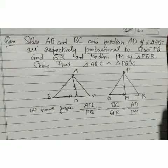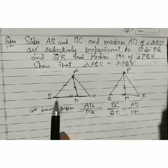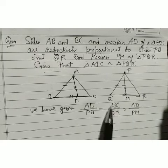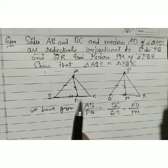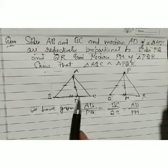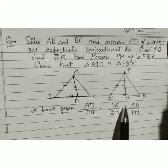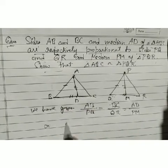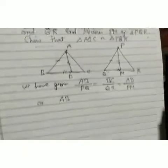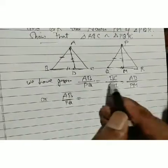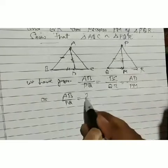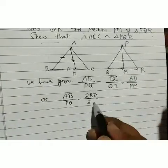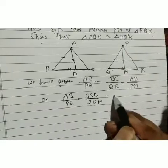Since D is the midpoint, BC = 2·BD and QR = 2·QM. So we can rewrite the ratio BC/QR as 2·BD / 2·QM, which simplifies to BD/QM after cancelling the 2s.